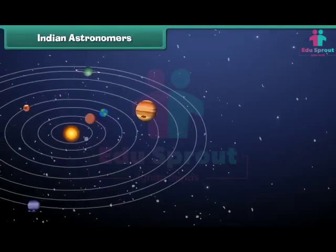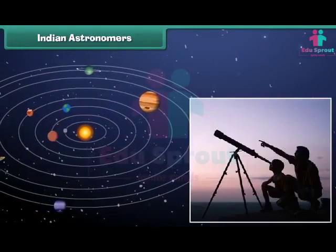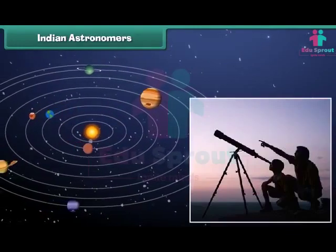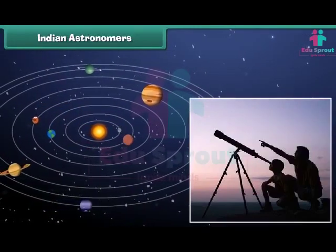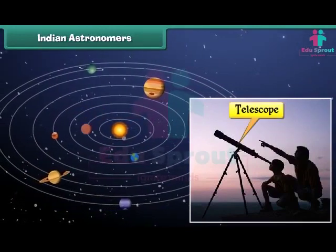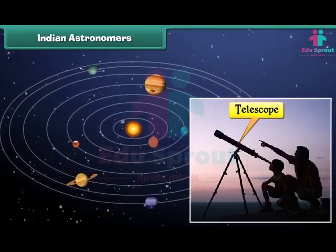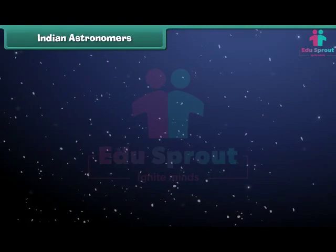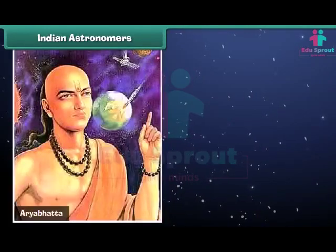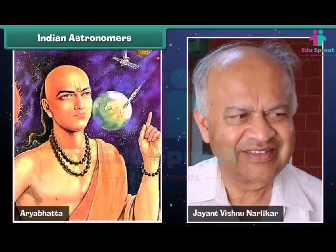An astronomer is a person who studies stars and planets. He uses a telescope for his study. Bhaskaracharya, Aryabhatta and Jayant Vishnu Narlikar are some well-known Indian astronomers.